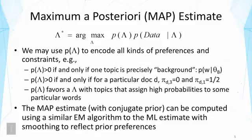We can also use the prior to force a particular topic to have a certain probability. For example, we can force document D to choose topic one with probability one half. Or we can prevent a topic from being used to generate a document — we can say the third topic should not be used to generate document D, so we set the pi value to zero for that topic. We can also use the prior to favor distributions that assign higher probabilities to particular words — not saying it's impossible, but strongly favoring certain distributions.